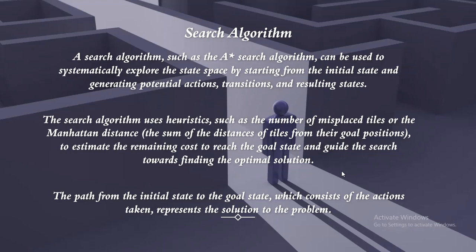Now, the search algorithm — such as the A* search algorithm — can be used to systematically explore the state space by starting from the initial state and generating possible actions, transitions and resulting states. The search algorithm uses heuristics such as the number of misplaced tiles, which is nothing but the sum of the distances of tiles from their goal positions, to estimate the remaining cost to reach the goal state and guide the search towards finding the optimal solution.